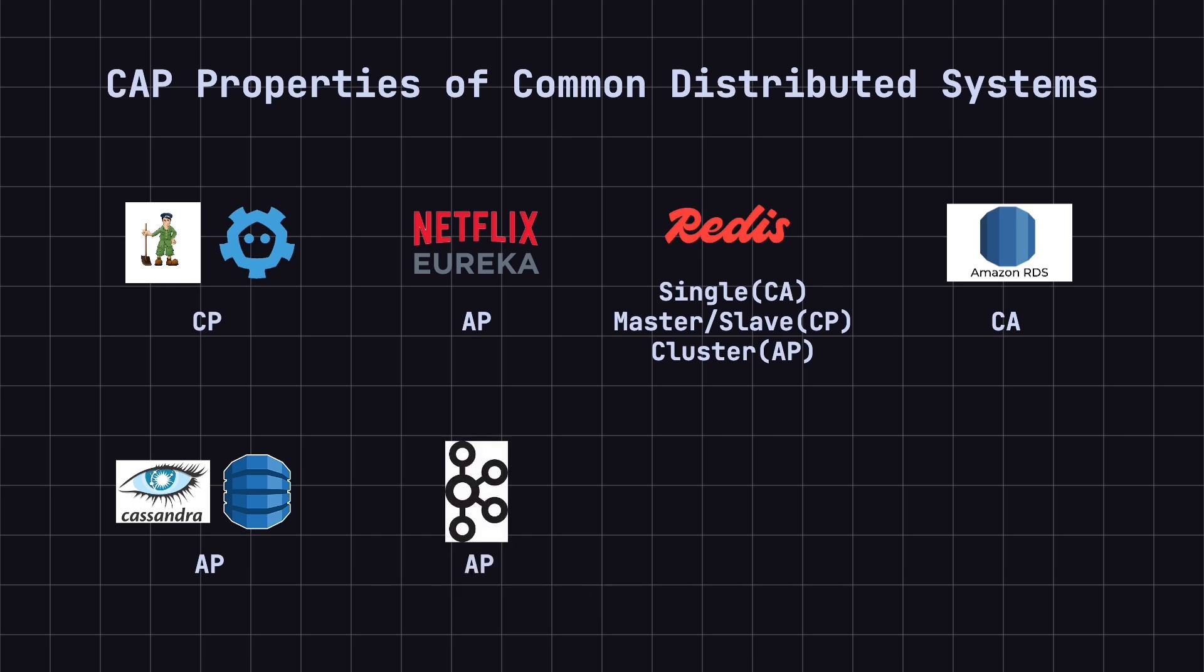Sixth, Kafka. By default, the distributed messaging system Kafka leans towards being an AP system, prioritizing availability while allowing for some data inconsistencies during partitions. However, through configuration, like setting acks = all and enabling the ISR mechanism, Kafka can enhance consistency, but it still isn't a fully CP system, as it tends to prioritize availability in extreme cases.